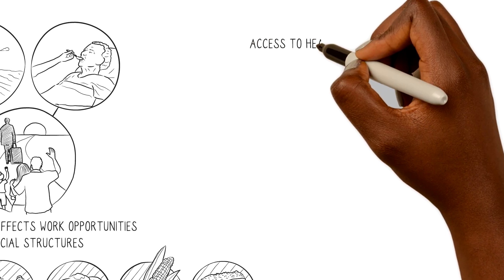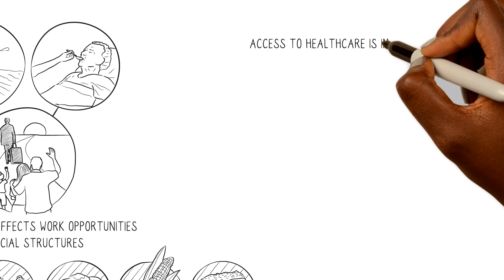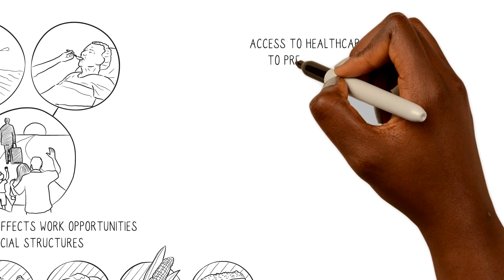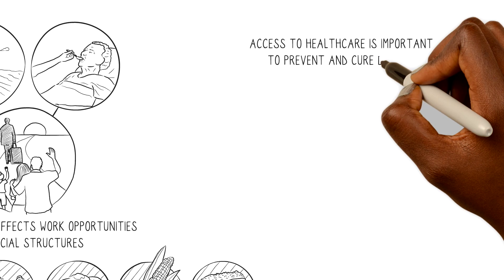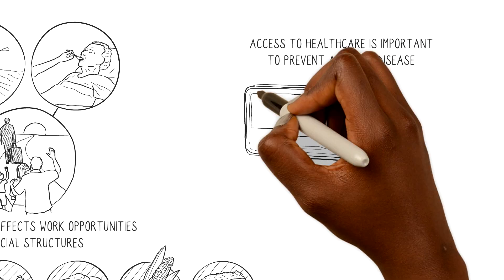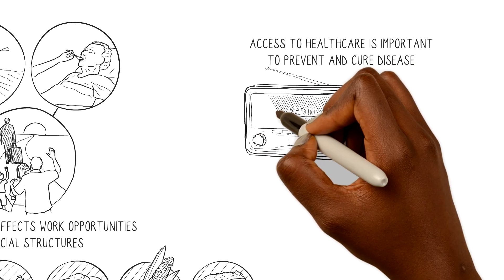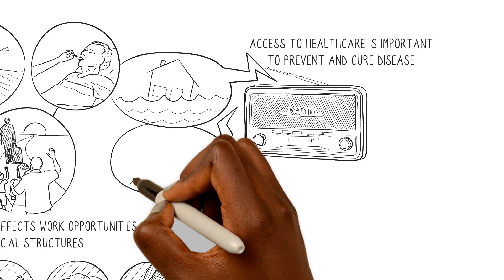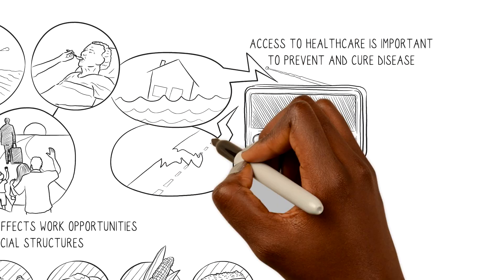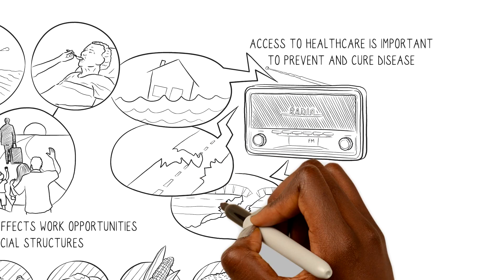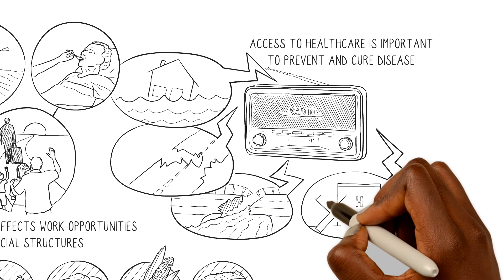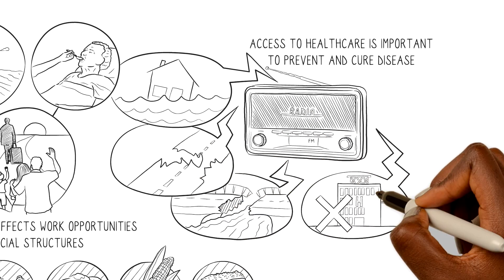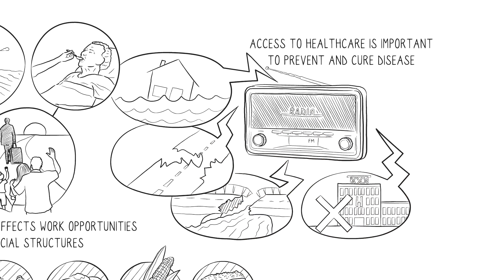Access to health care is important to prevent and cure disease. Extreme weather events such as flooding may damage roads, bridges, and health care facilities, making it difficult for people to access health care when sick.